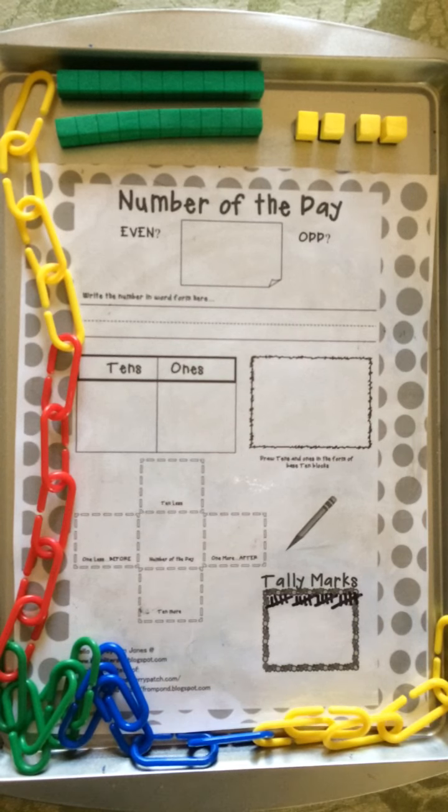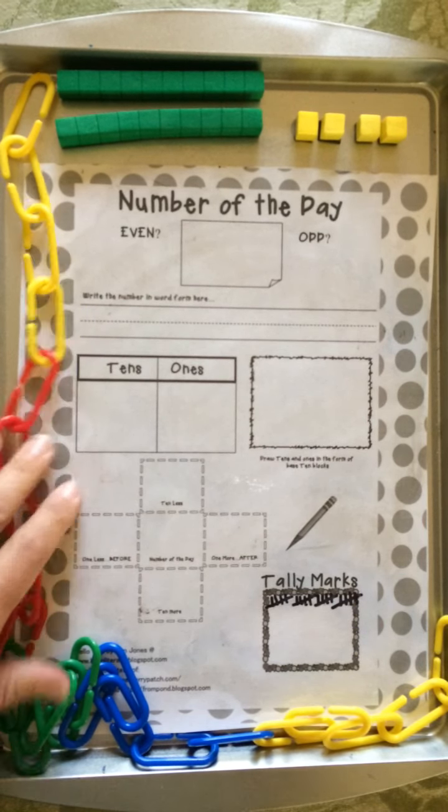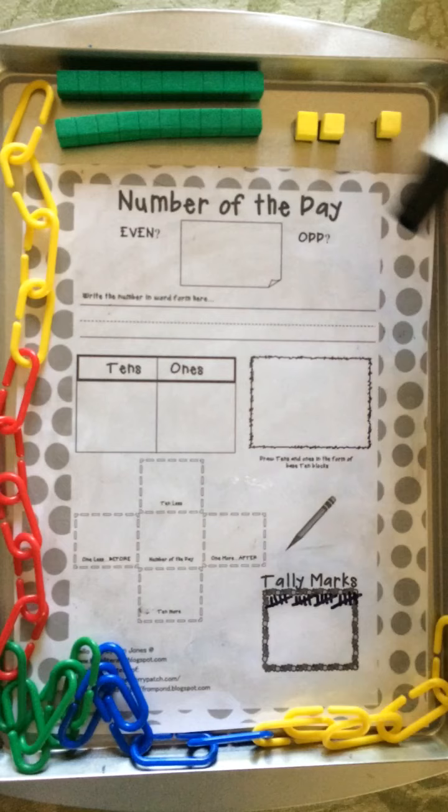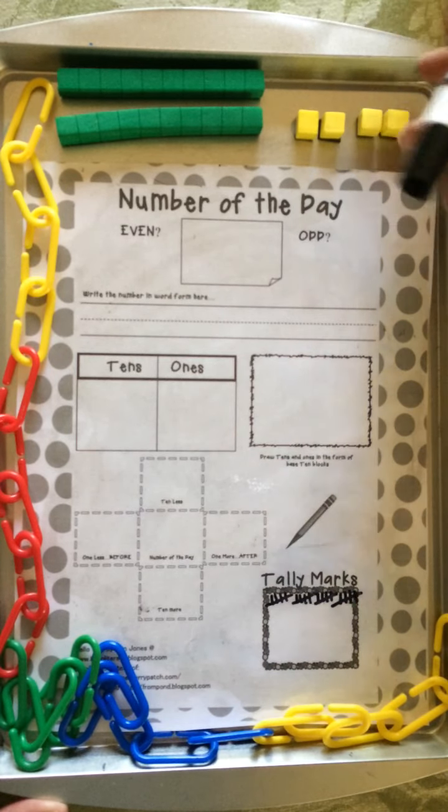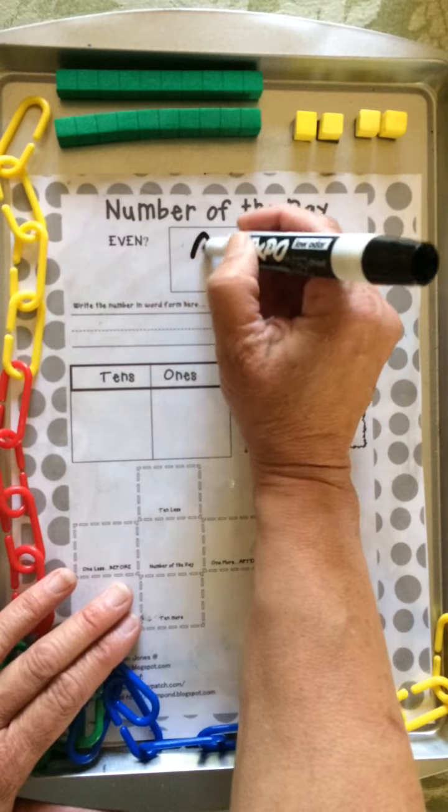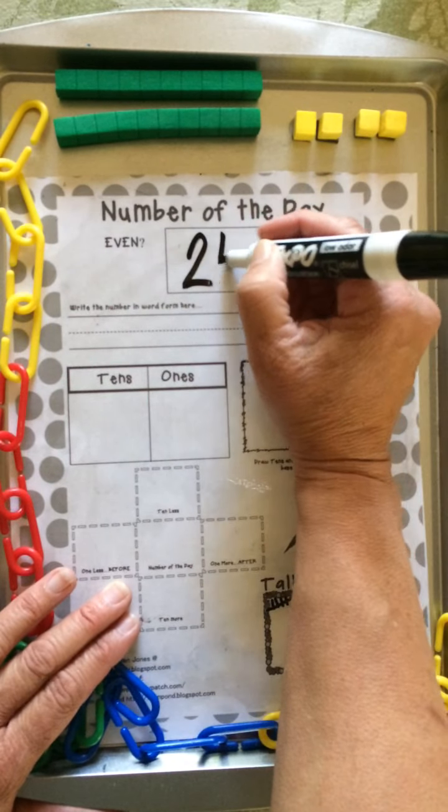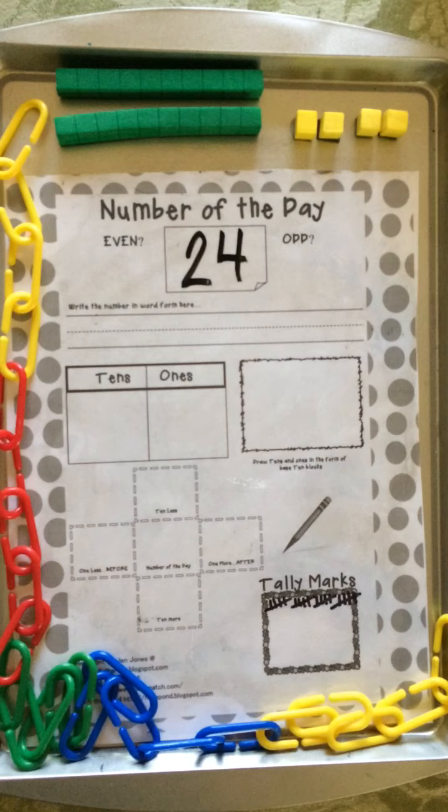What do you think? Odd or even? Which you know what, I don't think I revisited that yesterday. 23 was odd. That one doesn't have a partner.